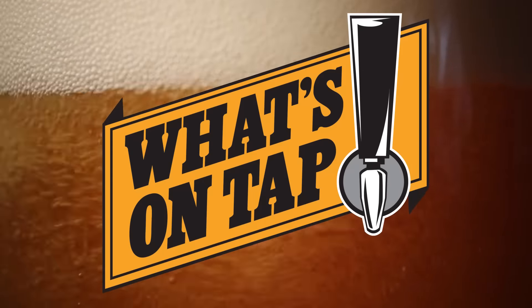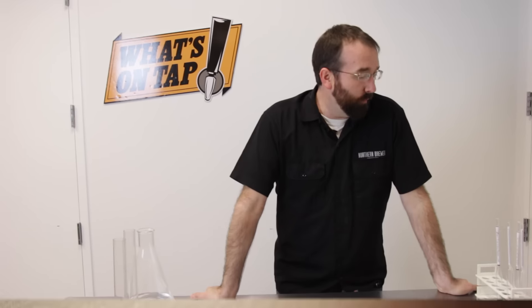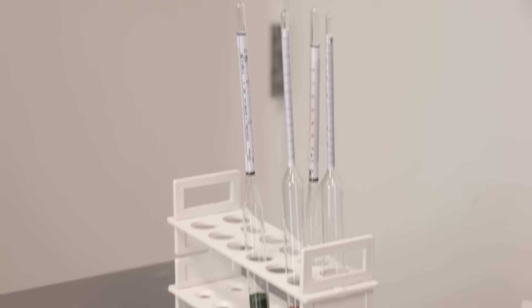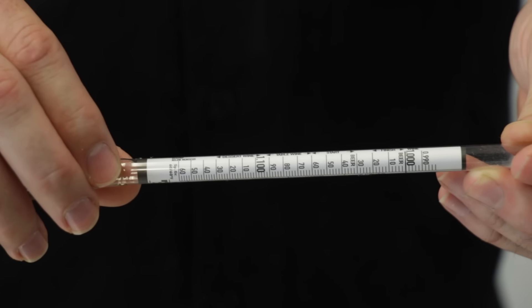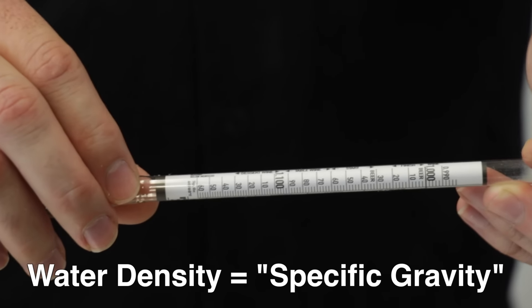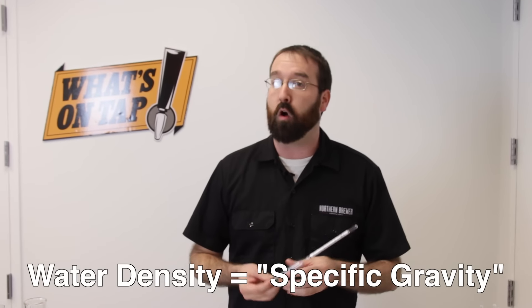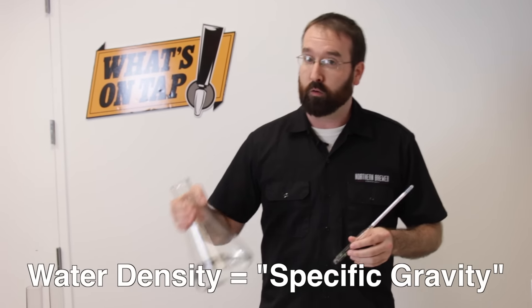Hey, this is Nick and welcome to What's On Tap. Today we're going to be talking about hydrometers. It's one of the most commonly asked questions from a new brewer. What this does is simply measure the density of liquid, or how much sugar is dissolved within water.